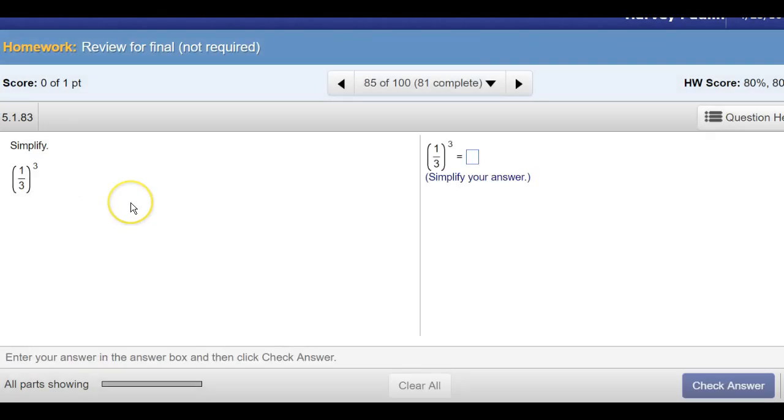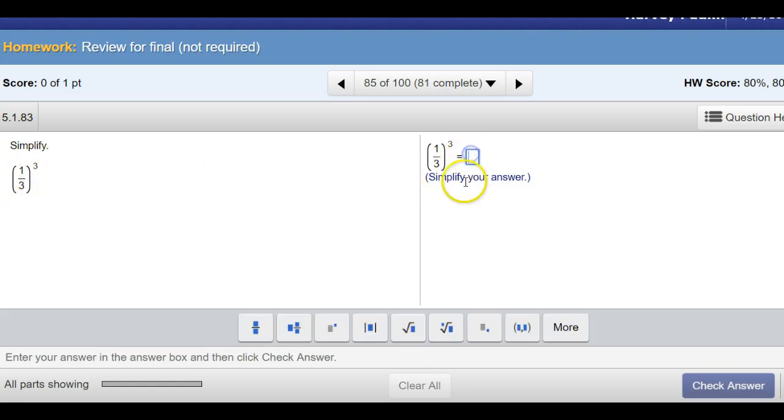Now, the rule here is you raise 1 to the third and 3 to the third. That will give you the fraction. 1 to the third is 1, and 3 to the third is 27.